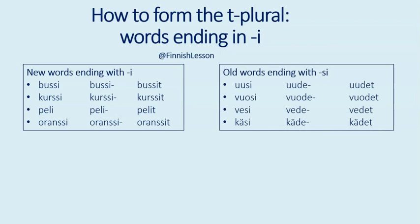Another subcategory are old words ending with -si. These are old words and no new words will enter this group. What happens here is the ending -si is replaced with -de in the stem. For example: uusi — the stem is ude — and the plural is uudet. So: uusi, uudet.